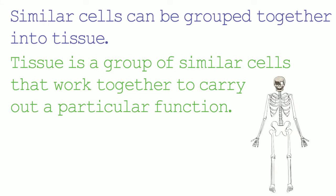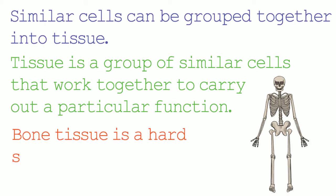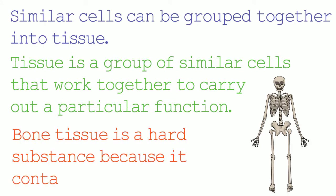One type of tissue is bone tissue. Bone tissue is a hard substance because it contains calcium salts. The calcium salts allow the bones to resist bending and compression forces. Compression forces are squashing forces.